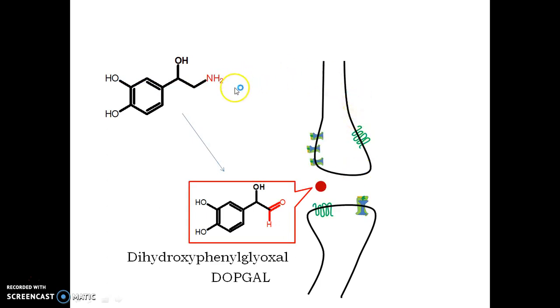This enzyme converts the primary amino group—as norepinephrine has a single amino group—the enzyme attacks this and converts it into an aldehyde.